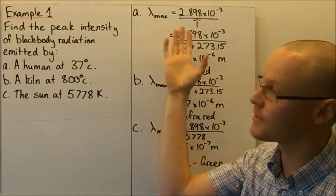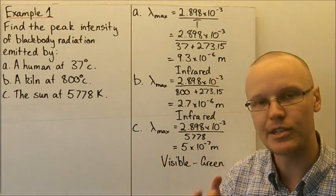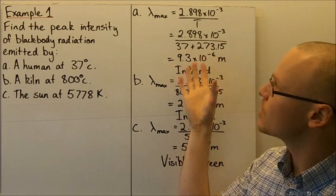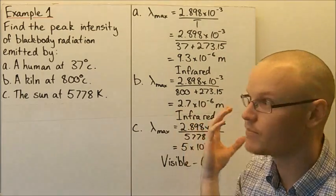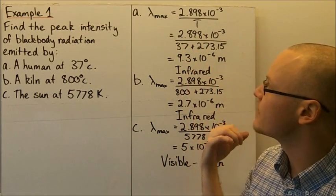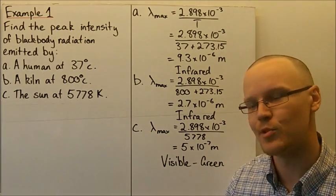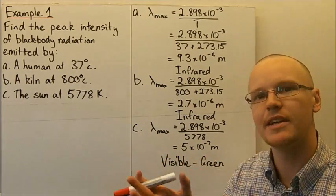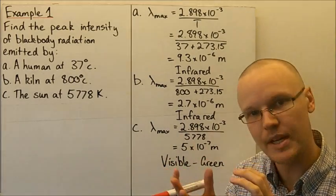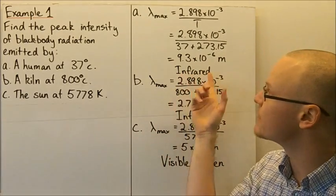Using Wien's Displacement Law, substituting in the peak wavelength equation, all values must be in SI units, so temperature must be in Kelvin. To convert degrees Celsius to Kelvin we add 273.15. Performing that calculation for a human at 37°C gives 9.3 × 10⁻⁶ metres, which is in the infrared part of the spectrum. That's why infrared cameras work — they interpret the infrared radiation emitted by humans and convert it to a visible image.